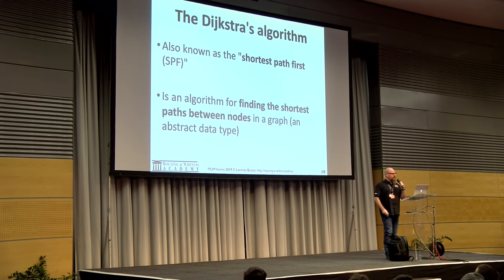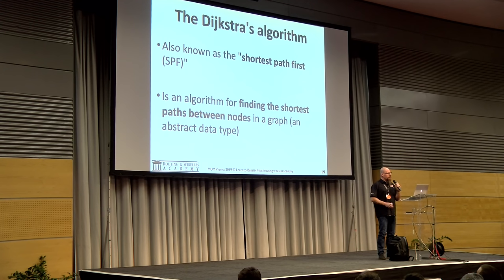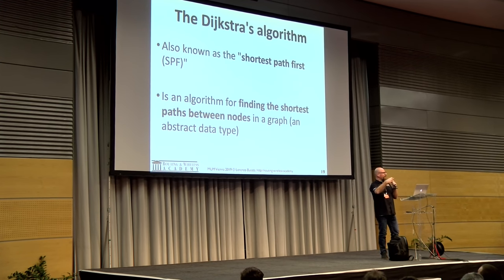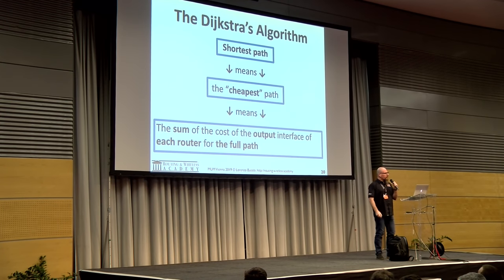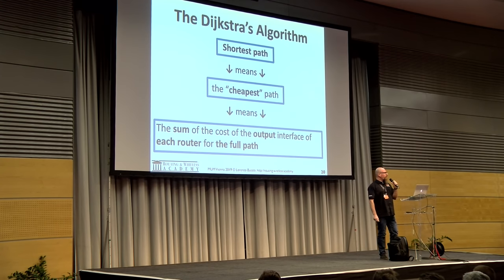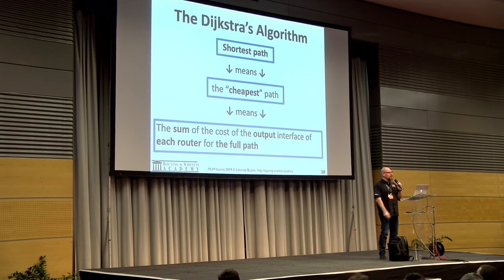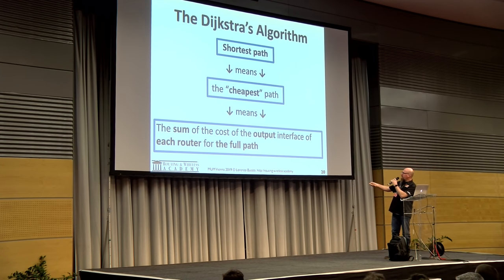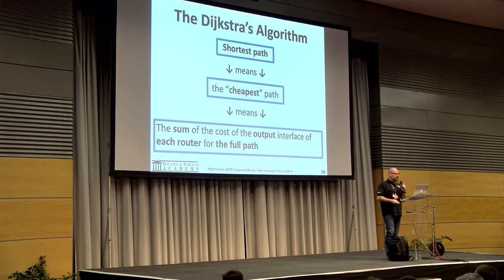The Dijkstra algorithm, also known as Shortest Path First (SPF), finds the shortest path between nodes — between two routers, a start and endpoint — in a graph. A graph here is not a graphical thing but an abstract data type. The shortest path means the cheapest path: the sum of the cost of the output interface of each router along the full path.